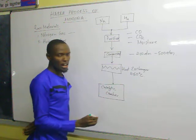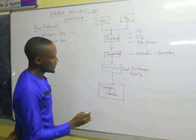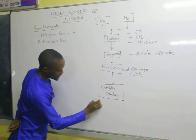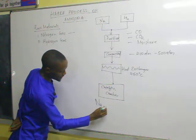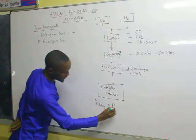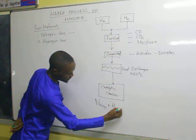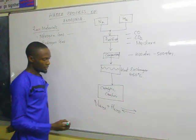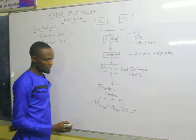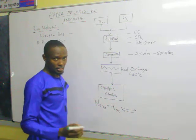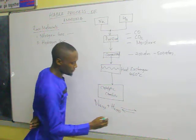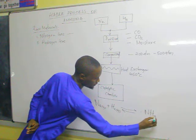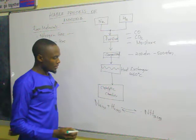This is where ammonia is formed. In the catalytic chamber, the reaction taking place is between nitrogen gas and hydrogen gas, which is a reversible reaction. It is catalysed by a catalyst — finely divided iron — to form ammonia gas.